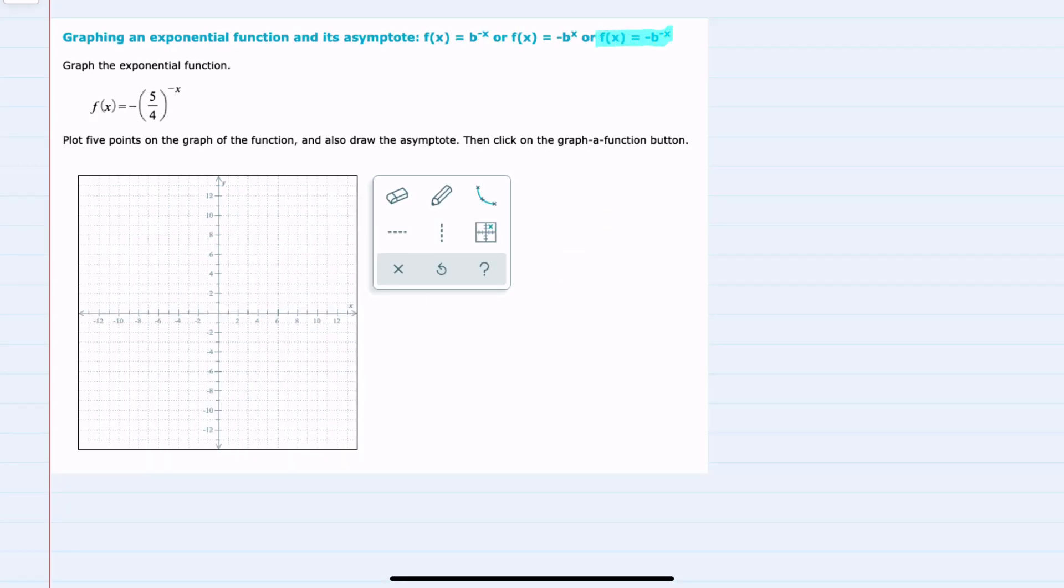For this example, we have this last case where we have a negative, the value b, being raised to the negative x. Since we're asked to graph by finding five points on the graph and then drawing the asymptote, I'm going to create a table here. I'm going to substitute five values in for x.